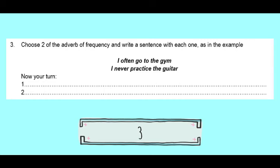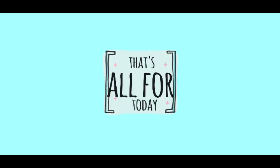Finally, you have to choose two adverbs of frequency and write a sentence with each one. For example: 'I often go to the gym' — yo a menudo voy al gimnasio — or 'I never practice the guitar.' Now it's your turn — ahora es su turno. You can write things like 'I always have breakfast' or 'I always have lunch,' and write your sentences there.